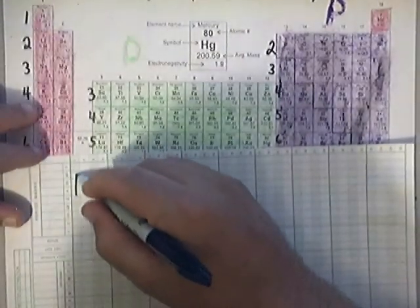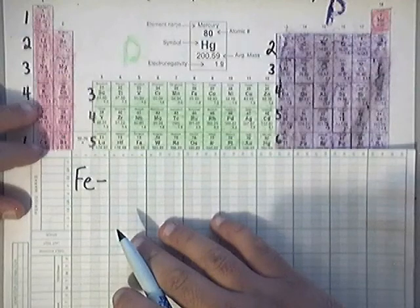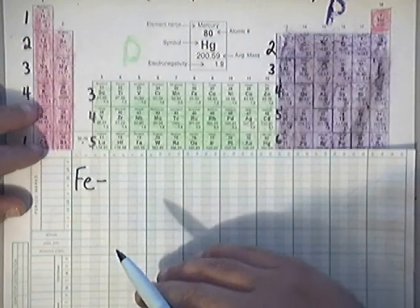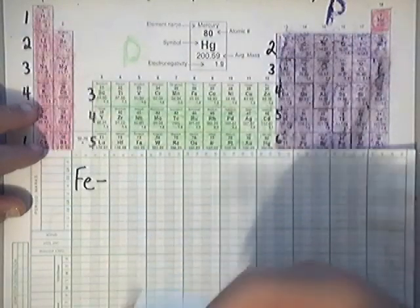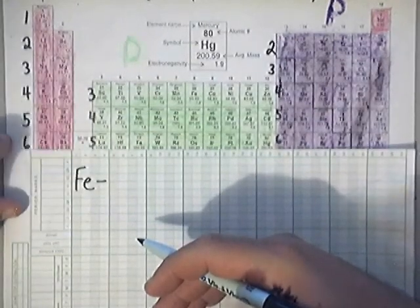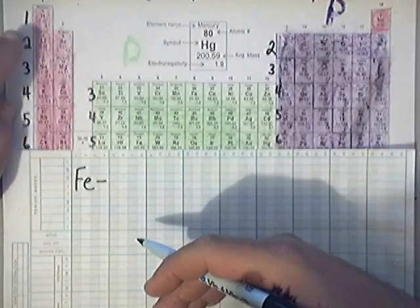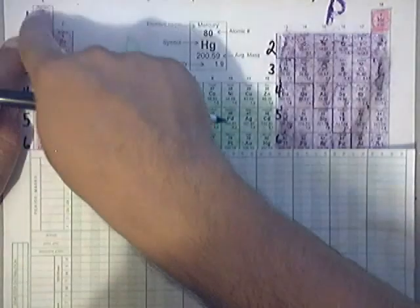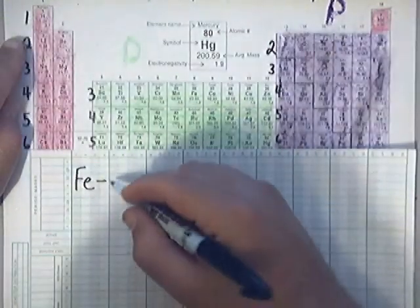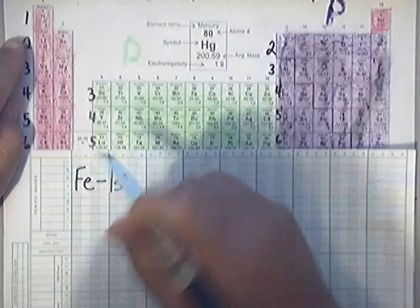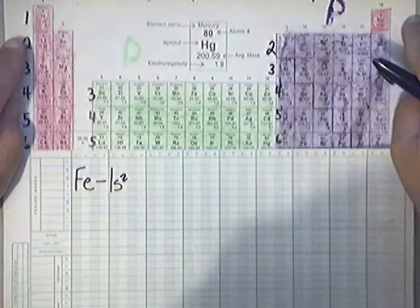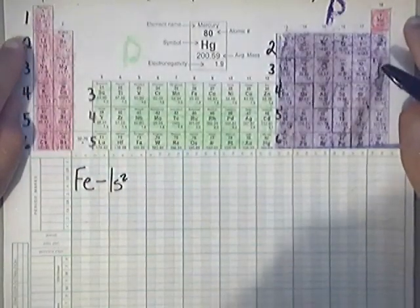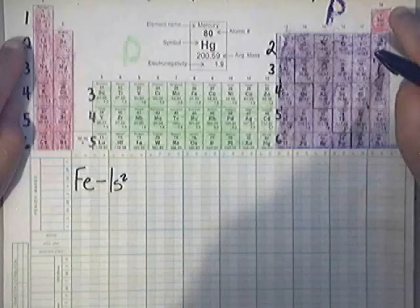Let's start with Fe. Remember when you write electron configurations, you write down basically the last colors in the last rows you pass, at least the way I have my periodic table labeled and colored for you. I'm going to pass up 1s2, that's why I write it down. I don't write down 1s1 because I have to also pass up the 1s2, which is basically bigger.